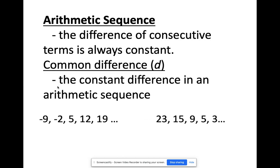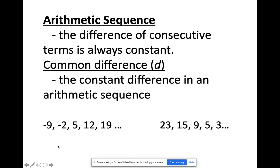Look at the examples. Notice the first one — it's an arithmetic sequence because you're simply adding 7 every time. You add 7, you get the next term. However, this second one cannot be considered an arithmetic sequence because the difference between 23 and 15 is 8, between 15 and 9 is 6, and between 9 and 5 is 4. It has to be constant — the same number every time.